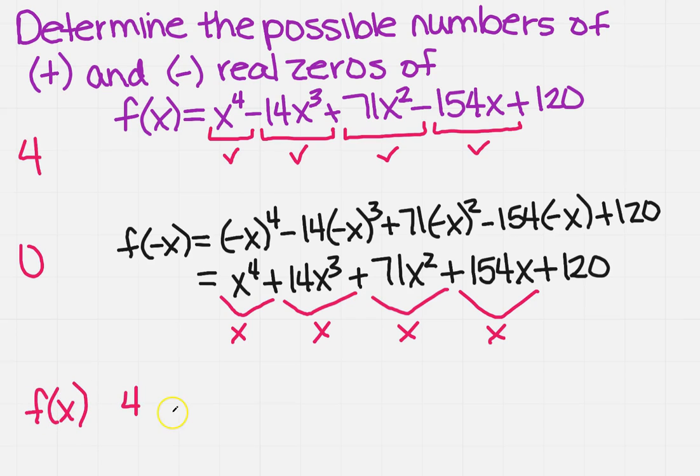and the next smallest even number is two, and the next smallest even number is zero. So there could be four, two, or zero positive real zeros.